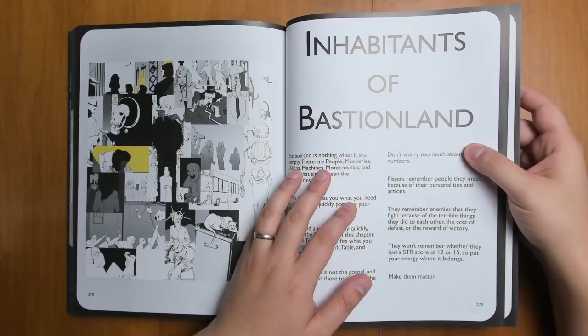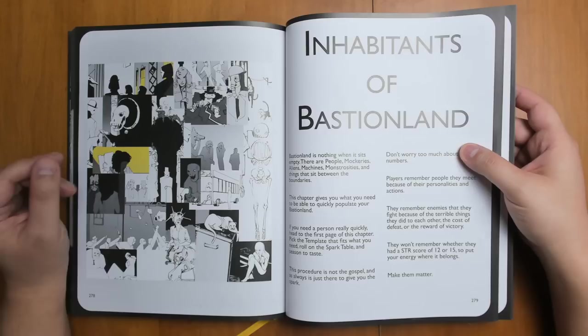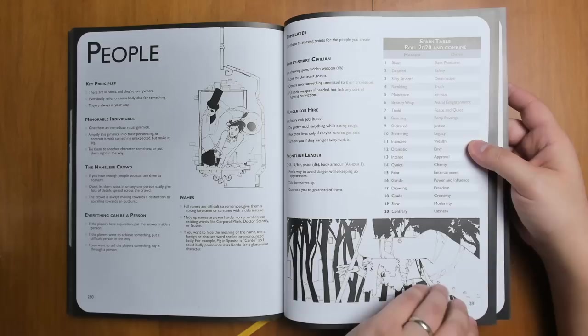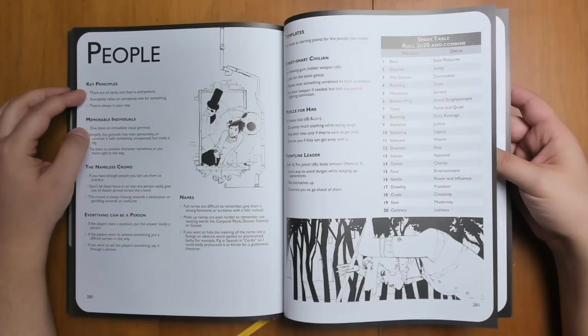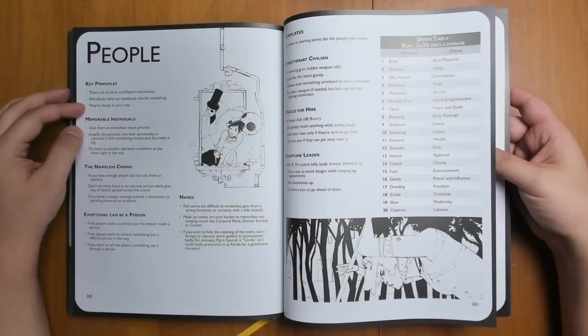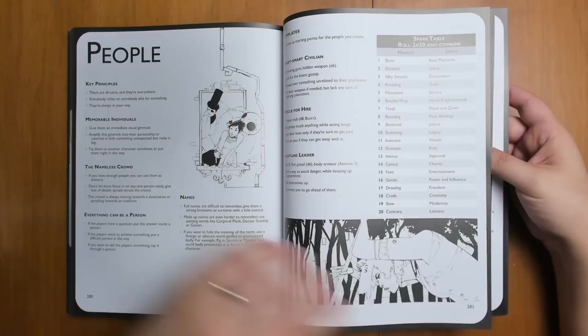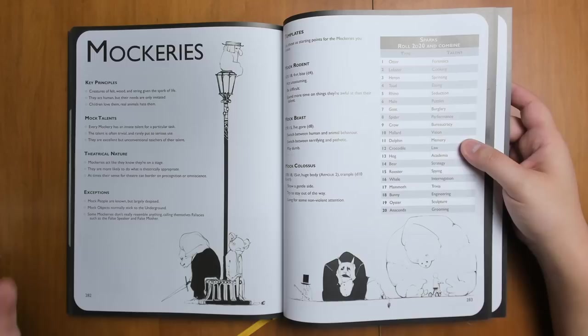And we get into the inhabitants of Bastion Land. Now, a great place to start with stalking Bastion Land with NPCs is, of course, to look at the failed careers. There's a hundred of them in there, and they can provide a lot of inspiration. We have some random tables for combining manner and their drive to get the flavor of an NPC. And we have some principles. There are all sorts, and they're everywhere. Everyone relies on somebody else for something. They're always in your way. So in this book, especially in the city, people are like scenery. There's crowds of them everywhere, getting in your way, doing stuff, making things complicated. You just have to deal with people constantly.